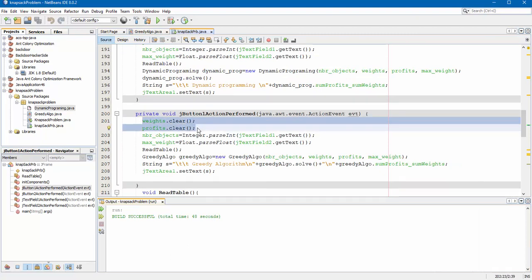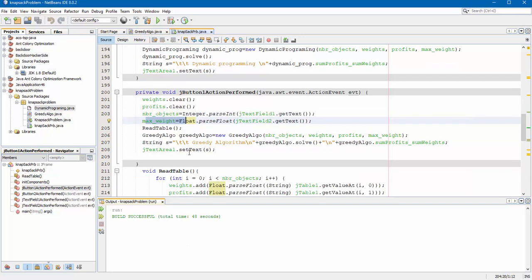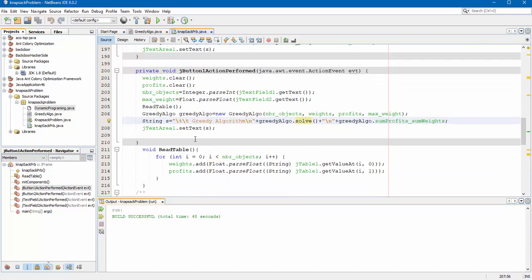So here. First, I initialize the vector. Because weights and profits are vectors. So here I read the value from the text field. Number objects. And the maximum weights. And after that. I call the solve method. Here we have read table method. To fill the vector.